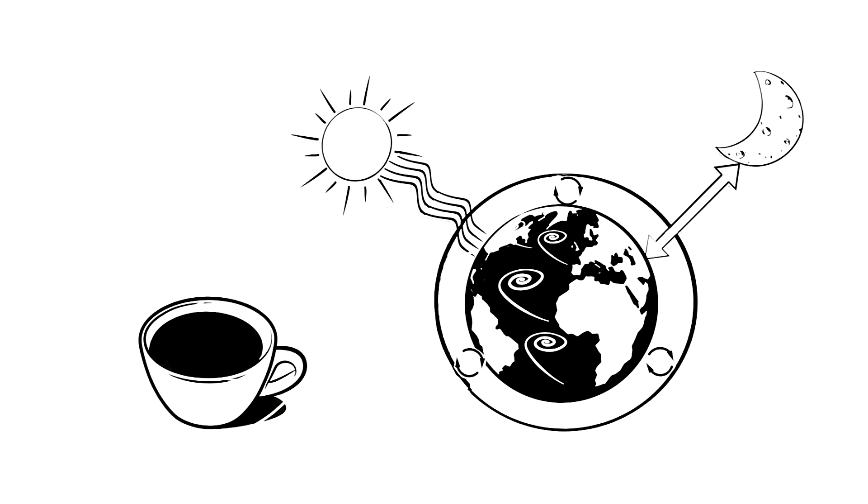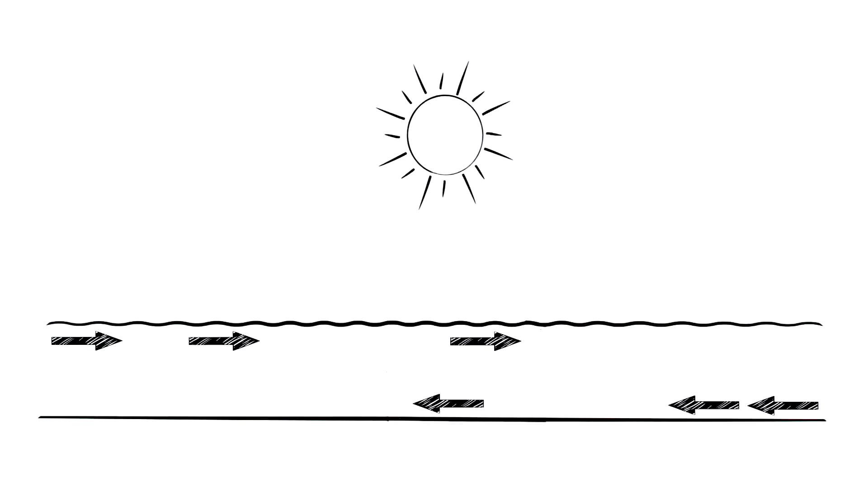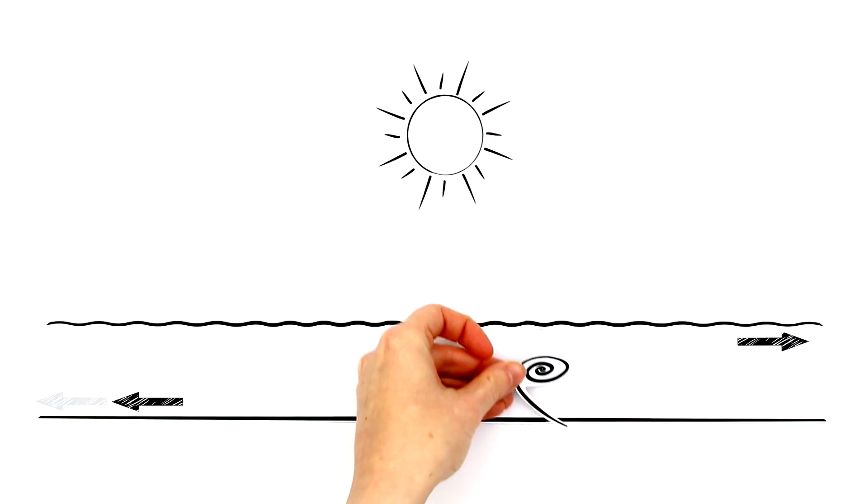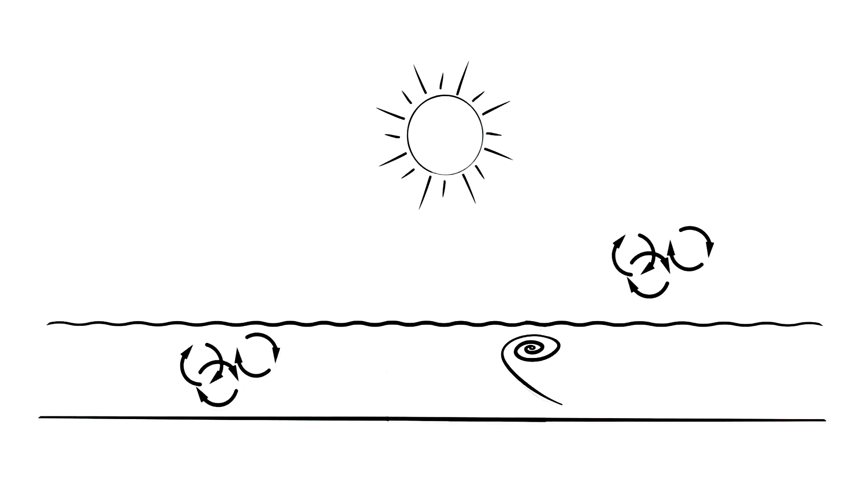Whenever you add cream to your coffee, you'll see little vortices form until the liquids blend into each other after a while. When computing ocean currents, these vortices and mixing processes play an extremely important role.